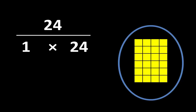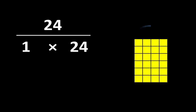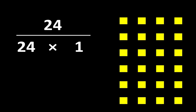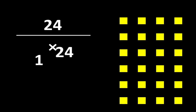Now let's remove this oval so we can start to see some other ideas. If we can make one group of 24, then that means we can also make 24 groups of 1. Now we can see 24 groups of 1. We can think of it either way and know that they are both equal to 24.